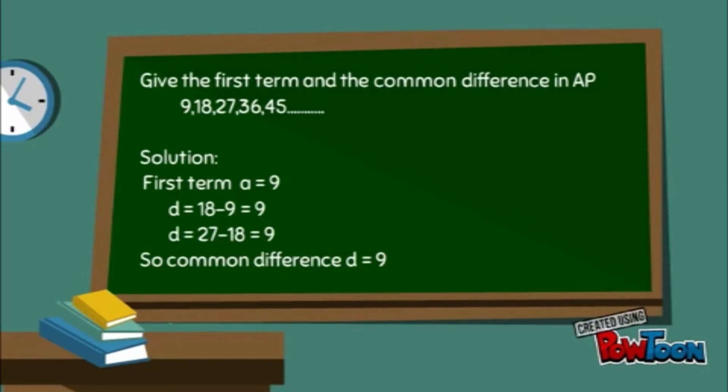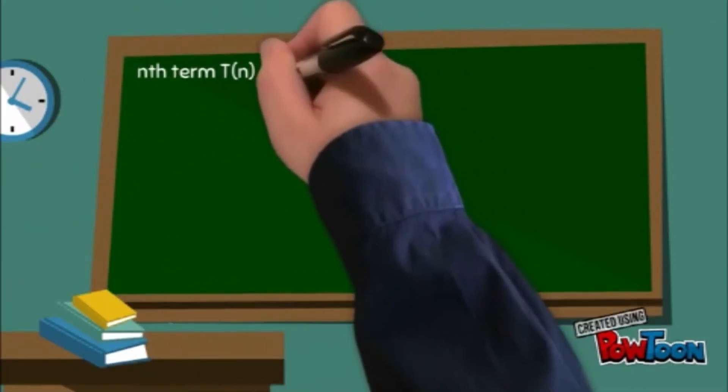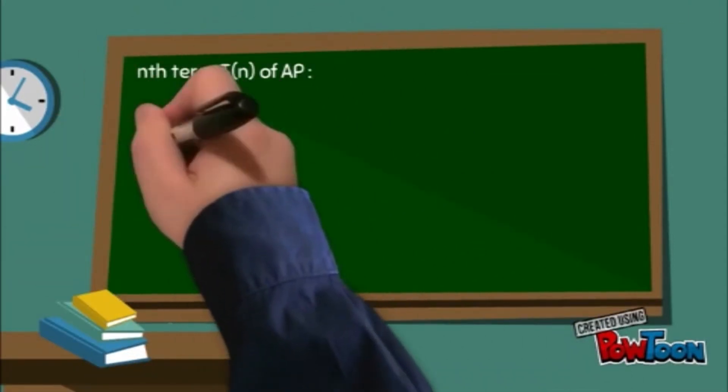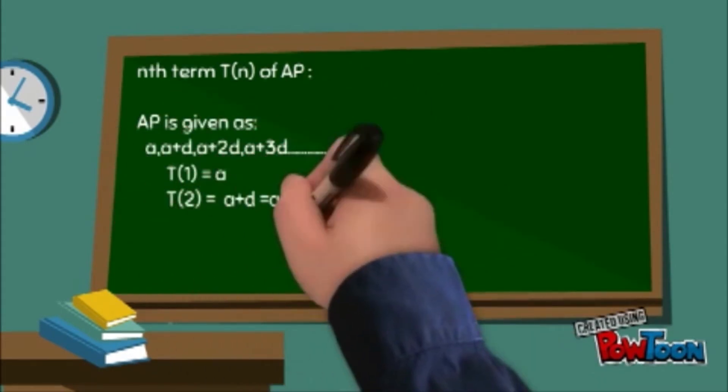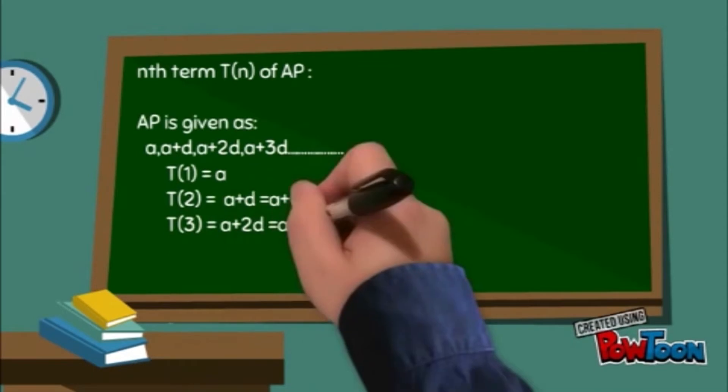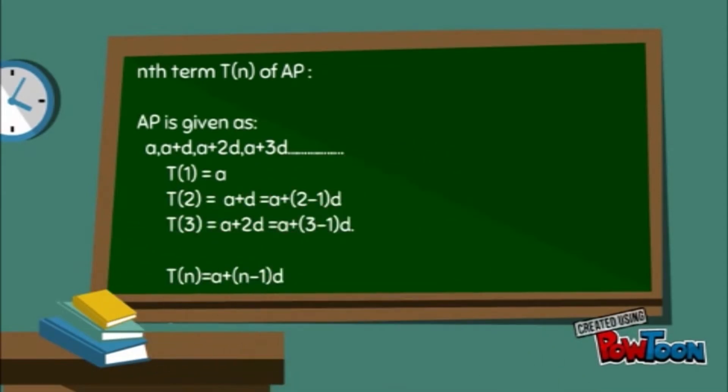Now, it may be the case that we need a particular term of arithmetic progressions. So, to get that term we need a formula. Formula of nth term of AP. As we know, arithmetic progressions is given as a, a+d, a+2d, a+3d and so on.